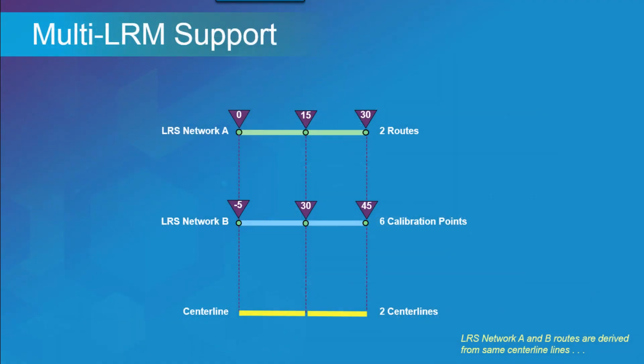Another advantage of ArcGIS Pipeline Referencing is support for multiple linear referencing methods. Under one advanced linear referencing system, users can build multiple LRS networks. For example, two networks can be built using the same center lines but with different linear referencing methods and different calibrations. A pipeline organization could have one network for engineering stationing, another for continuous pipe measures, and additional networks for odometer readings from pig runs or ILI runs.